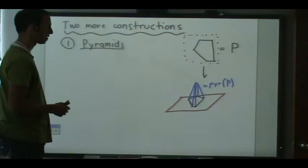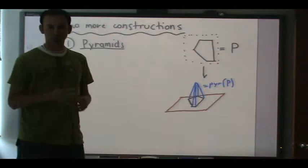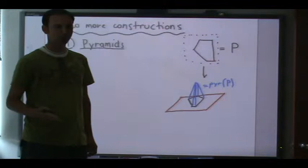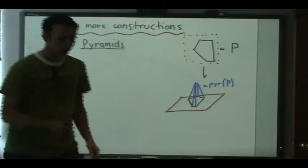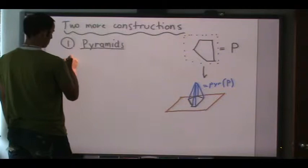We can do this in higher dimensions. Even though our intuition is mostly in two and three dimensions, it helps in higher dimensions — and sometimes it doesn't because it confuses you. But it's good to always keep track of the dictionary between algebra and geometric intuition. To generalize this construction, we take a polytope in R^d.